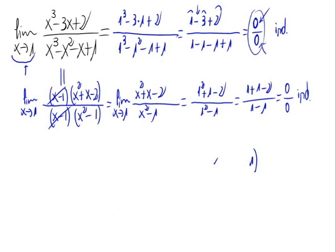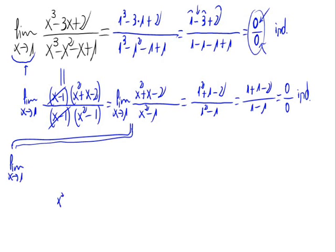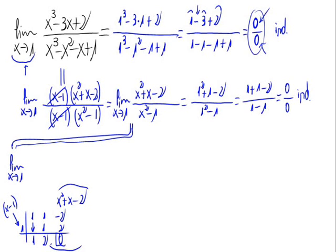Again, applying Ruffini on the numerator. With coefficients 1, 1, minus 2, trying with 1: 1 times 1 is 1, 1 plus 1 is 2, 1 times 2 is 2, and minus 2 plus 2 is 0. So x minus 1 is a root, and the quotient left is x plus 2. The numerator can be written as x minus 1 times x plus 2.